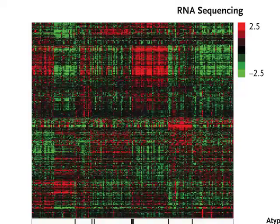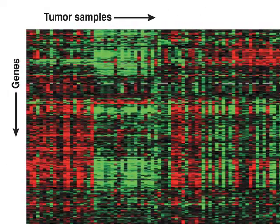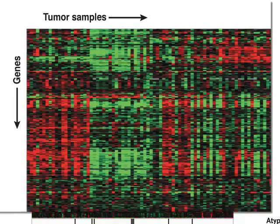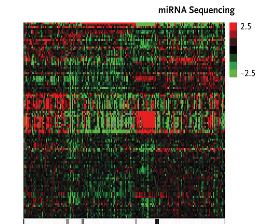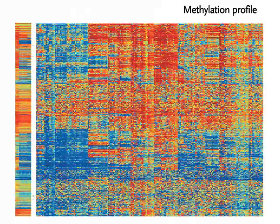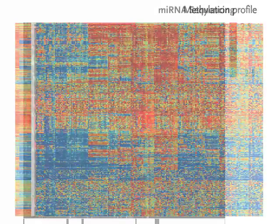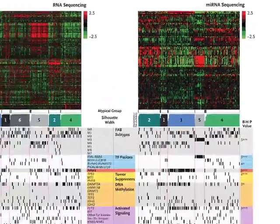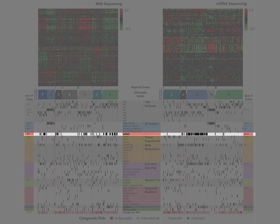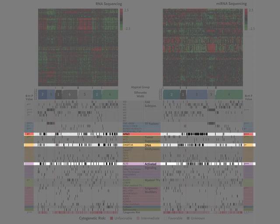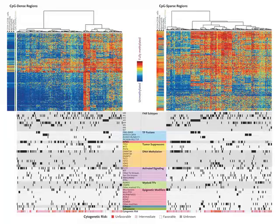Patterns of messenger RNA expression revealed seven different clusters of AML samples. Tumor samples are arrayed across the top, and individual genes are shown from top to bottom. Profiles of microRNA expression are segregated into five clusters. Methylation profiles are also separated into discrete clusters. Distinct relationships among mutation patterns and expression and methylation profiles were discovered. For example, the group of samples with co-occurring mutations in NPM1, FLT3, and DNMT3A were associated with distinct messenger RNA, microRNA, and methylation patterns.